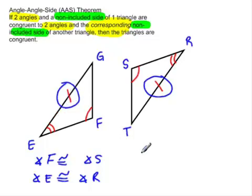Well, notice that side EG is congruent to RT. Now, we know that by the markings. Now, in order for this to be congruent by angle-angle-side theorem, these two sides have to be corresponding.